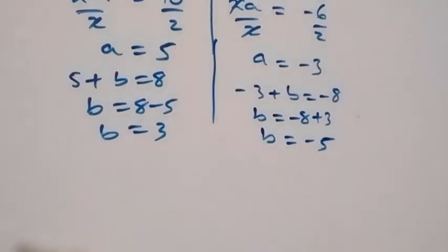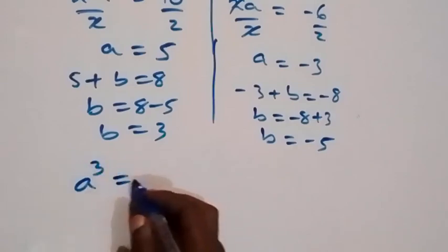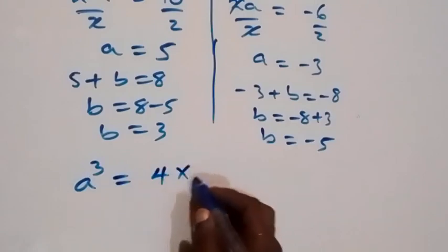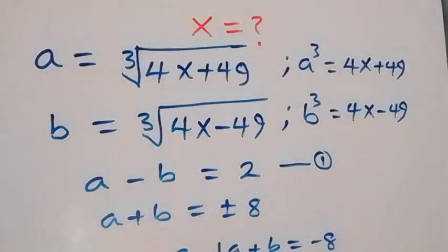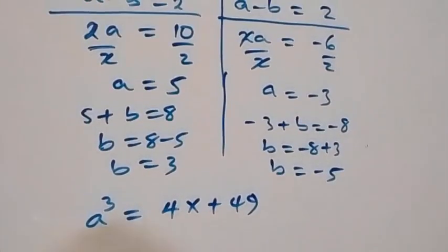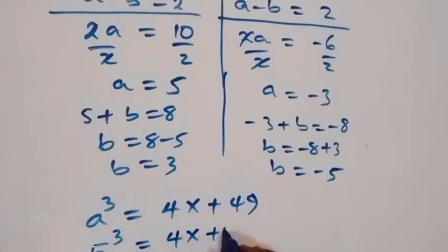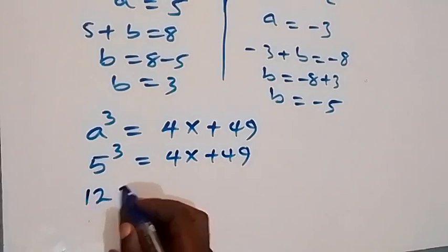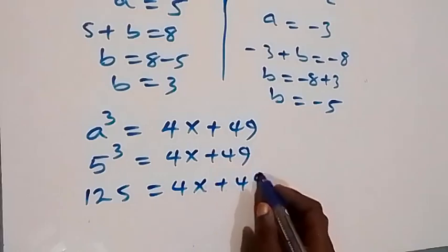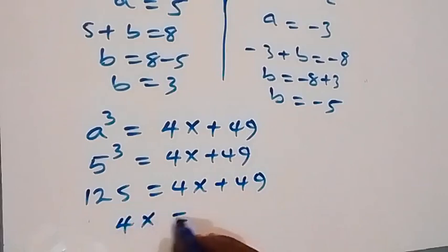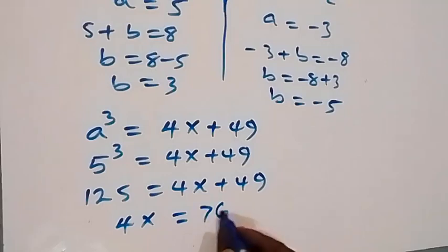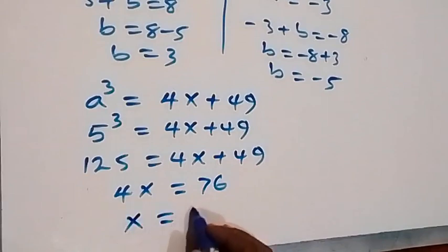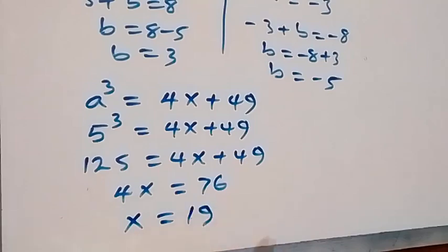Recalling that A equals the cube root of 4x plus 49, for A equals 5, we have 5 cubed equals 4x plus 49. Since 5 cubed is 125, we get 125 equals 4x plus 49. Taking 49 to the other side, 4x equals 76, and dividing by 4, x equals 19.